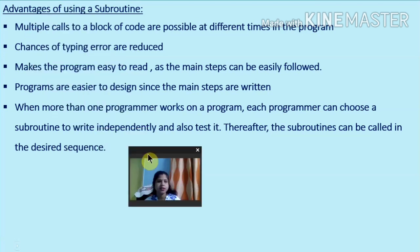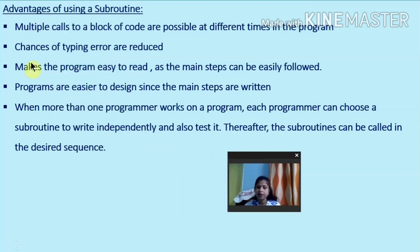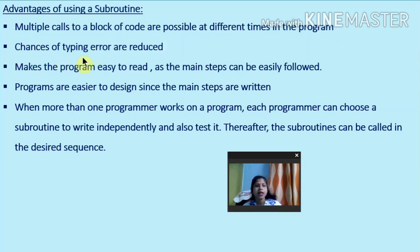So what are the advantages of using a subroutine? A subroutine is a small program which can be used inside a main program. Once a subroutine is formed or developed, it can be called or used many times. Multiple calls to a block of code are possible at different times in the program. Chances of typing errors are reduced. It makes the program easy to read as the main steps can be easily followed. Programs are also easier to design.